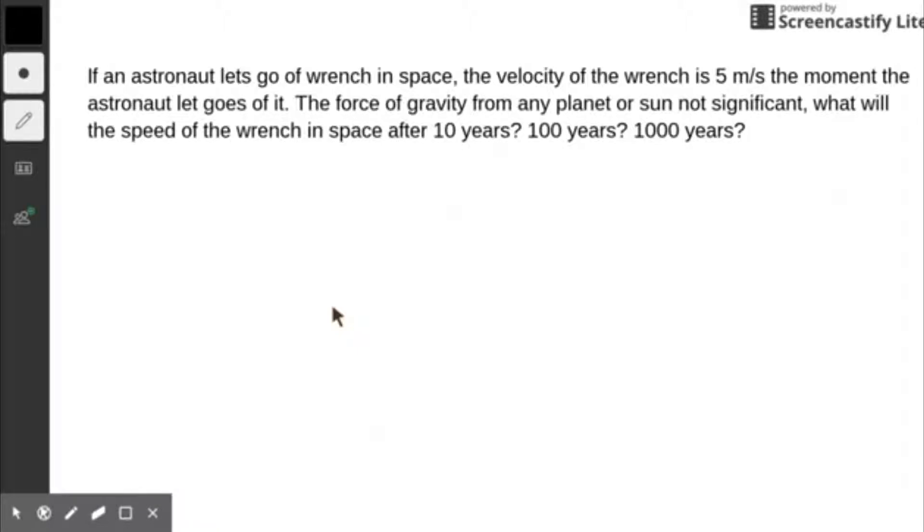Okay, here's a simple problem to understand inertia and Newton's first law. If an astronaut lets go of a wrench in space, and the velocity of the wrench is 5 meters per second the moment the astronaut lets go of it, the forces of gravity of any planet or sun are not significant. What would be the speed of the wrench after 10 years?